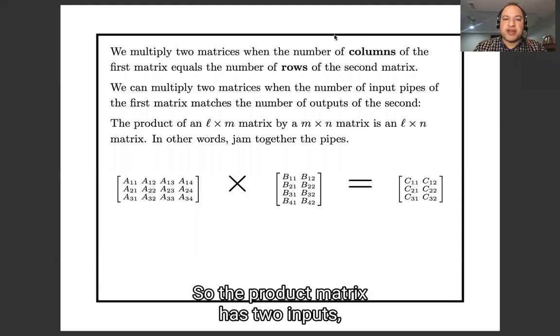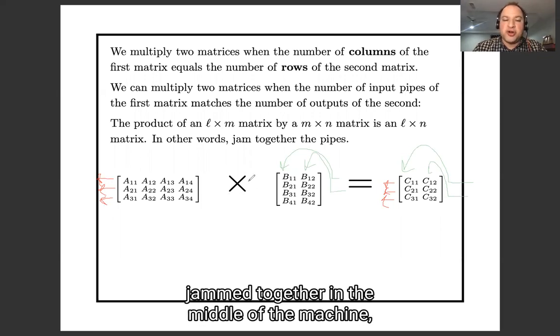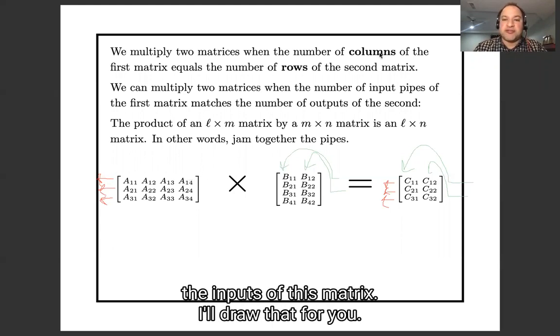So the product matrix has two inputs, just like this one does. And the blue pipes are jammed together in the middle of the machine, where we've plugged the outputs of this matrix into the inputs of this matrix.